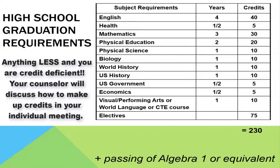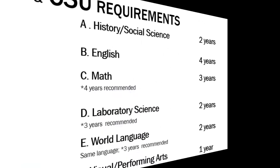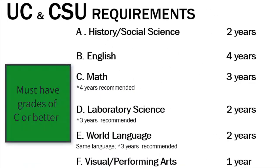When choosing your courses, be mindful that anything less is considered a credit deficiency and you may have to choose additional courses. You will work with your counselor and discuss a plan of how to make up any missed credits. These are the requirements for the UC, University of California, and CSU, Cal State University college systems. You can see that there are greater requirements than just meeting the general high school graduation requirements.